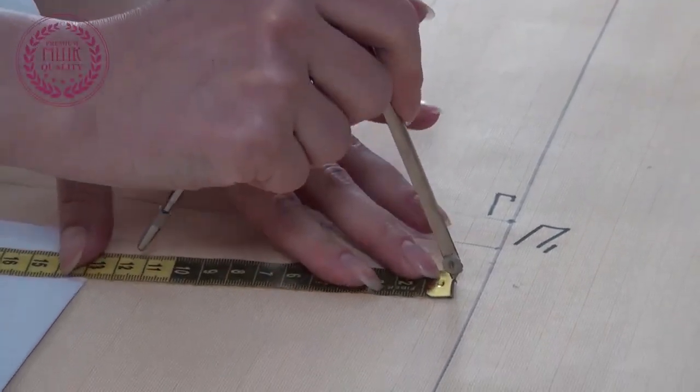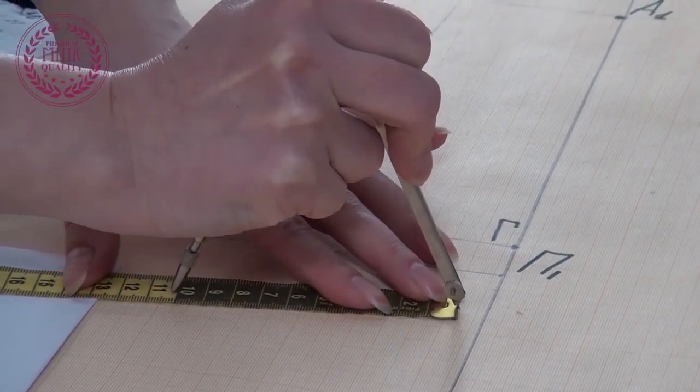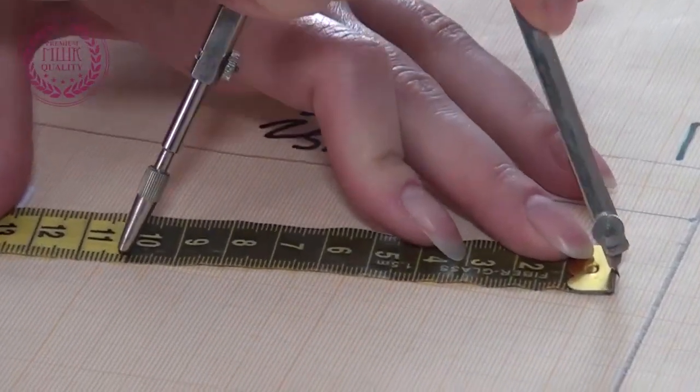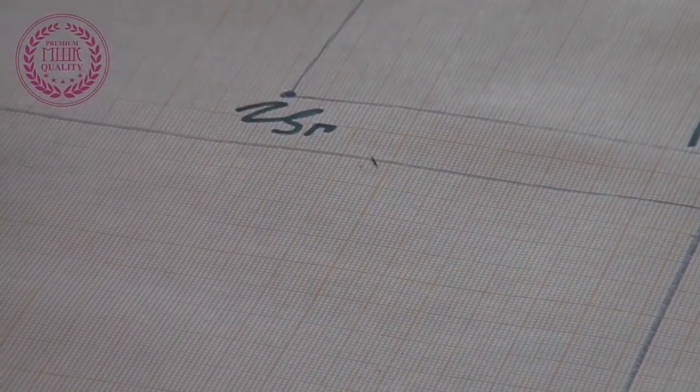I open the side of the compass to the length of this measurement, for example 10 cm, and make an arc from point A3.